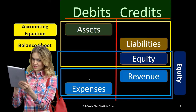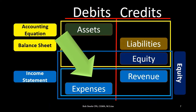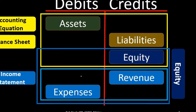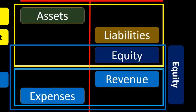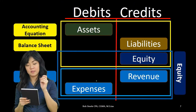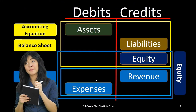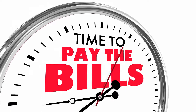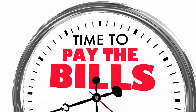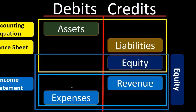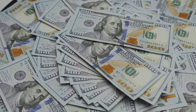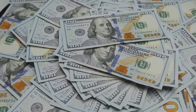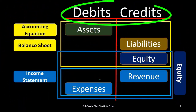Another piece that confuses people is the relationship between expenses and liabilities — the two things we don't typically like. Liabilities are credit balance accounts and expenses are debits. For example, paying the utility bill with cash or accruing a bill would mean we credit the liability, a payable, and debit the expense. There's nothing good about incurring a liability and recording an expense. We need a debit and credit in order for them to be equal.